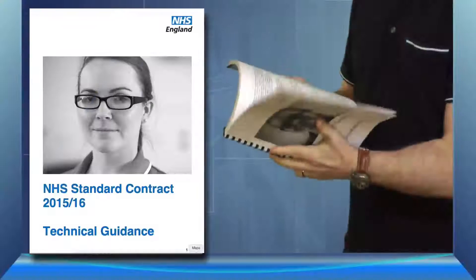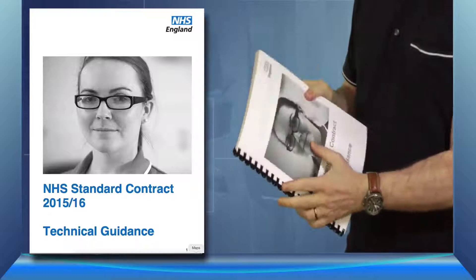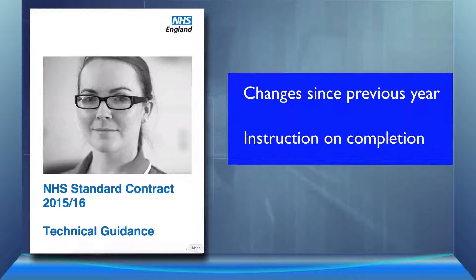Next is the technical guidance. This guidance, all 137 pages of it, is an essential companion to those interested in the NHS contract. It concentrates on changes in the contract since the previous year and provides instruction on how to complete the various sections and schedules of the particulars.